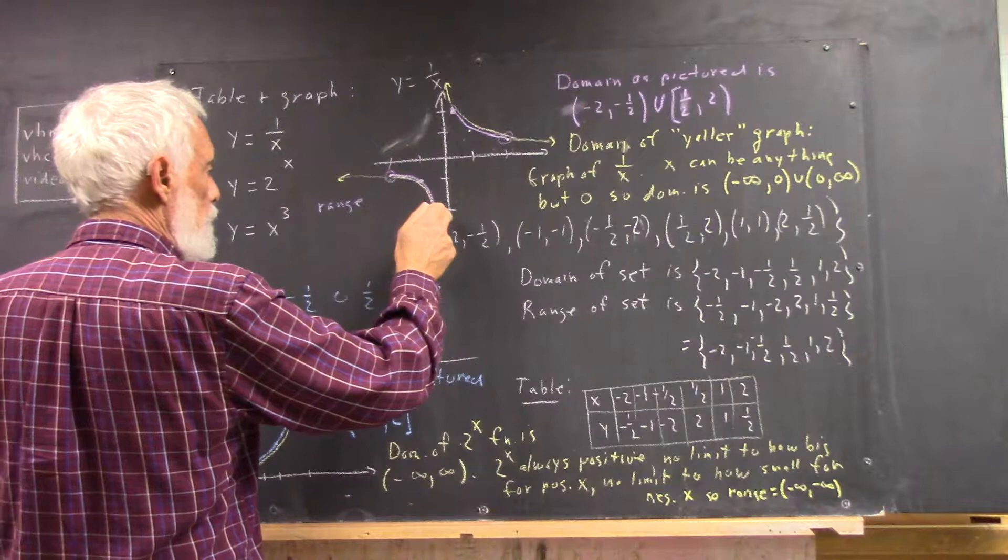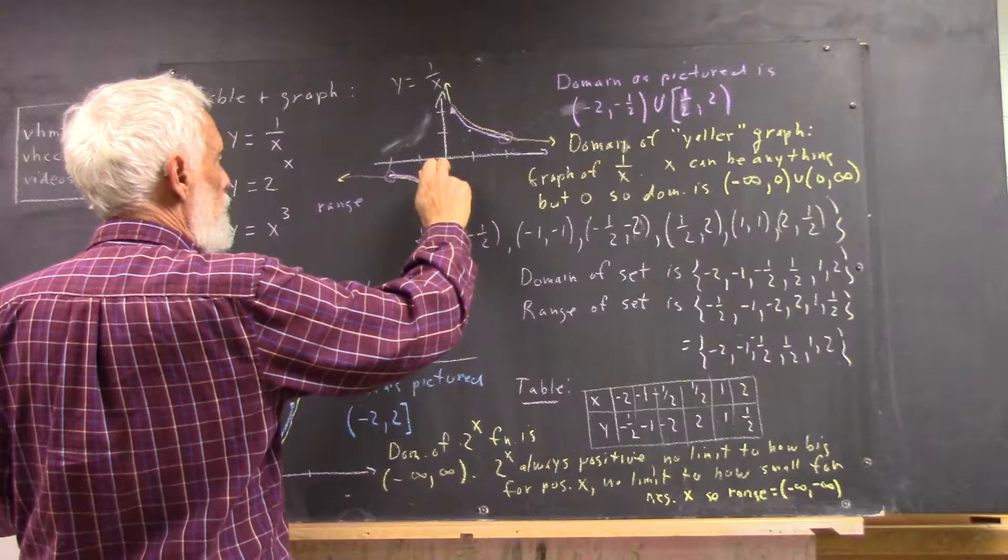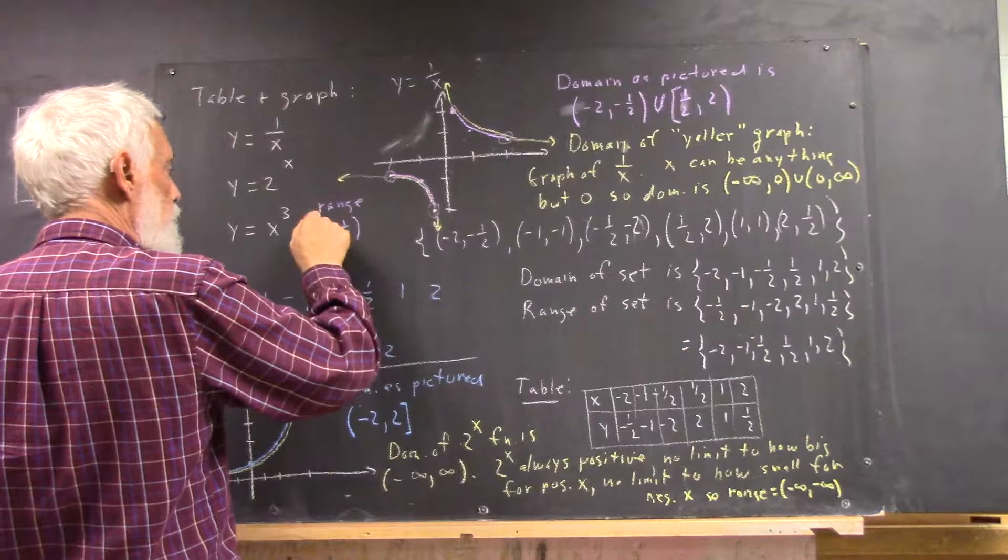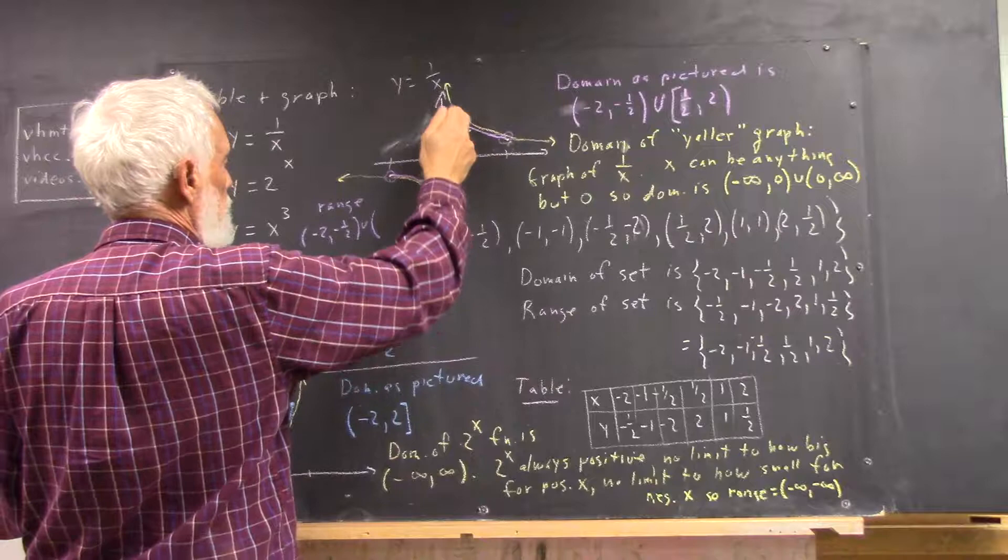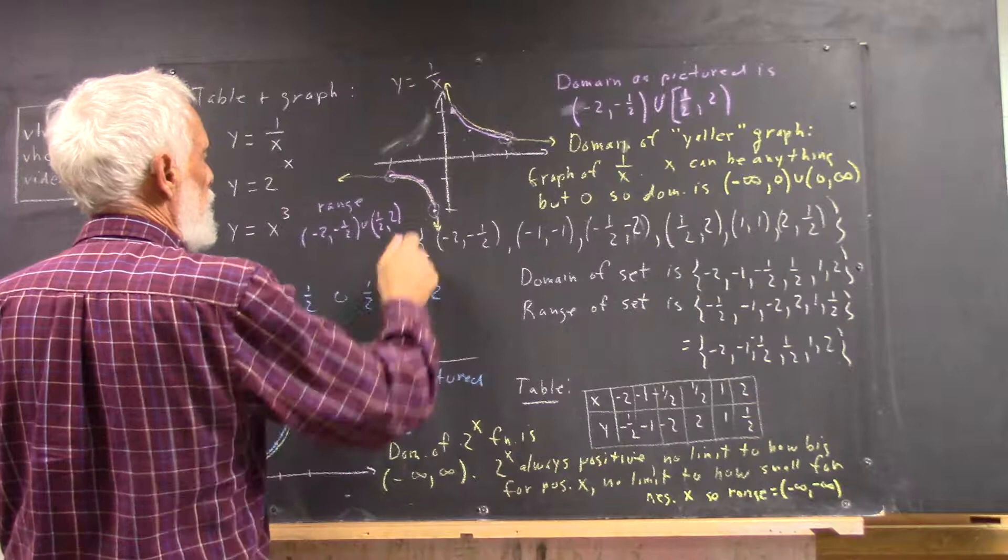So we could say that the range of this function is purple for the range of the purple function. And we'll start from the lowest number in the range and move to the highest. So we're going from negative 2 to negative 1 half, not including either of those because these points aren't included. And then we're going from 1 half to 2, not including the 1 half because this point isn't included, but including the 2.